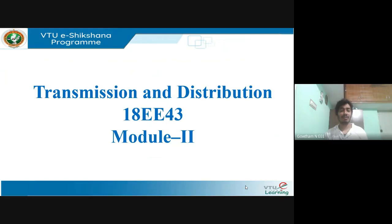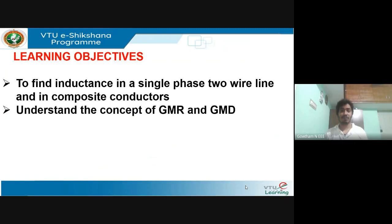Let's begin with the second session of module two. The learning objectives of this session are to find the inductance in a single phase two-wire line and also in composite conductors. As mentioned in session one, line parameters are important in designing the transmission line network, and they affect performance since they are distributed. Inductance is rated in per unit length, and GMR and GMD — geometric mean radius and geometric mean distance — are also covered.